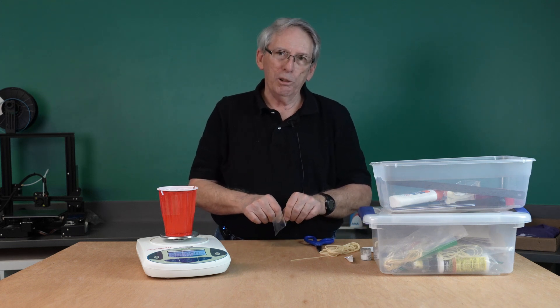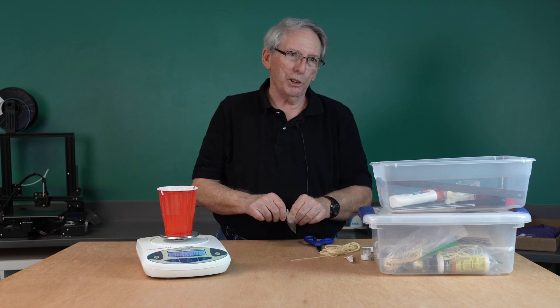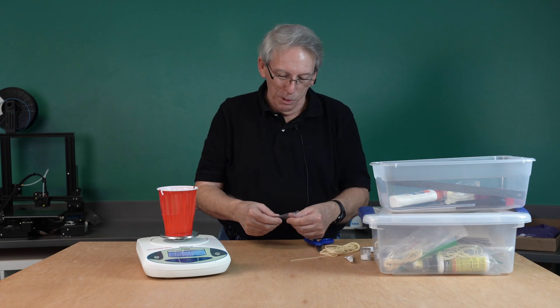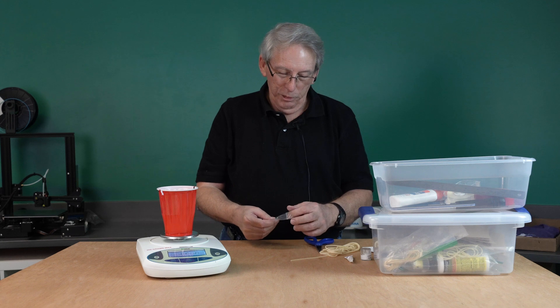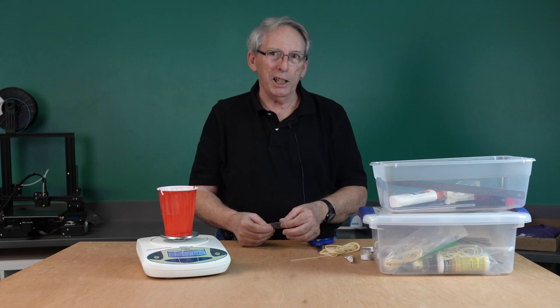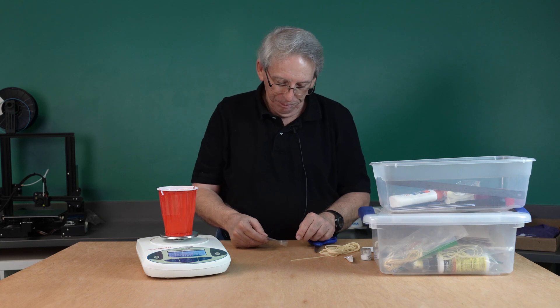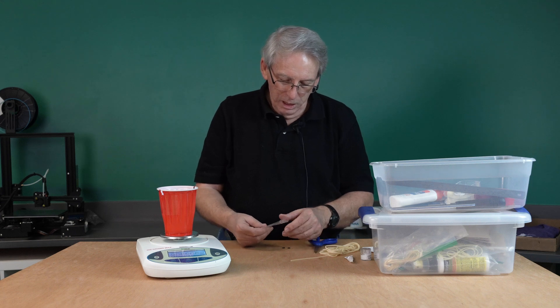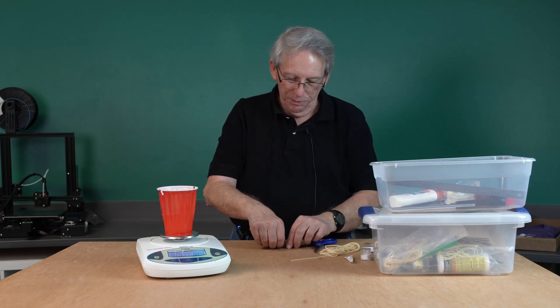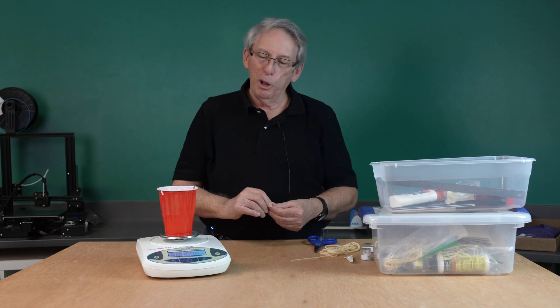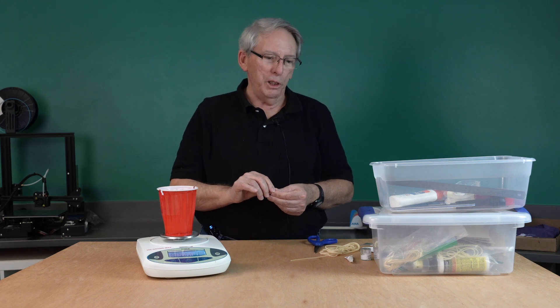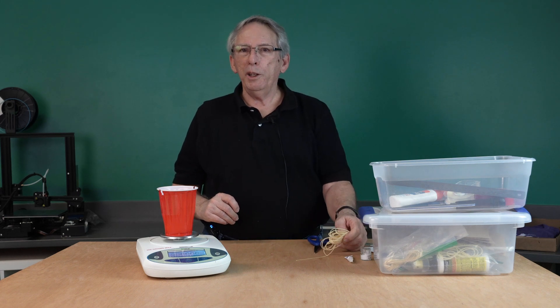You can buy O-rings probably at a hardware store, Lowe's Home Depot, or from any of the vendors that sell Science Olympiad airplanes. You will need two O-rings. Now O-rings are part of the motor, so they are included in the weight of the motor.